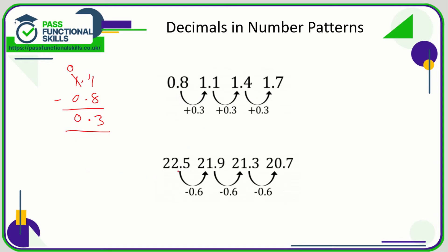Here we are going down, so what we need to do here is just work out what is the difference between 22.5 and 21.9. Again let's put our decimal point in line. 5 minus 9 can't be done, so the 2 becomes a 1, 5 becomes 15. 15 minus 9 is 6.